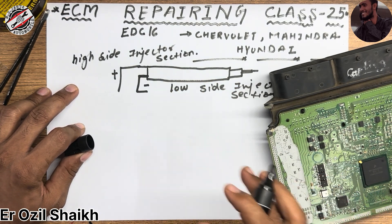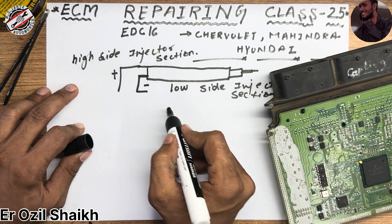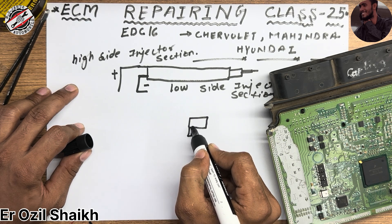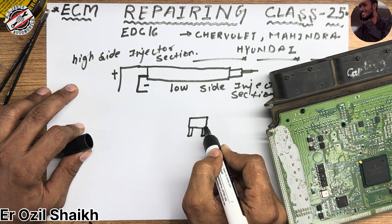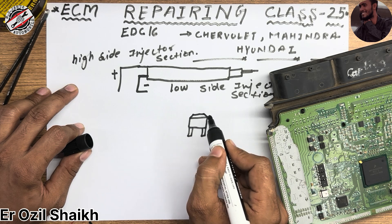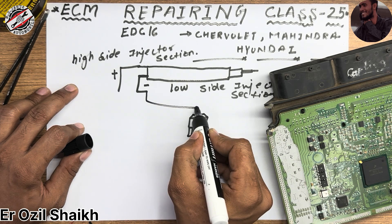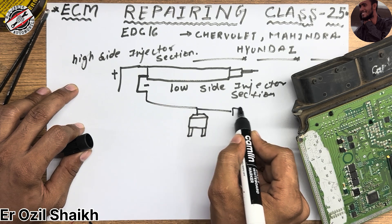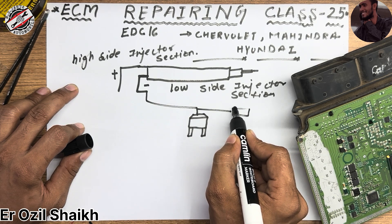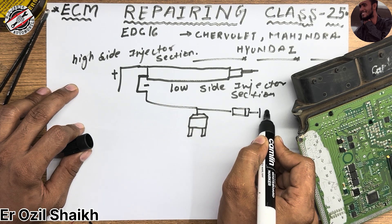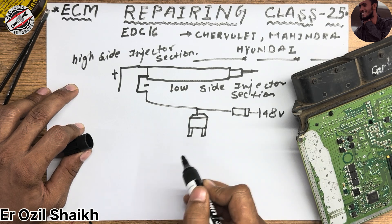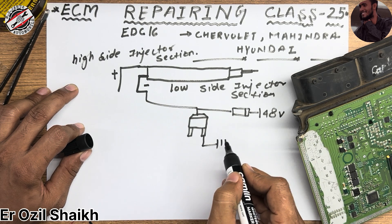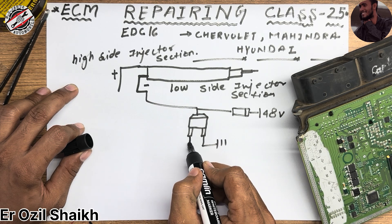The low side injector section works like this: we have an N-channel MOSFET. There is a diode for protection, and on one side of the diode there is 48 volts. The source of the MOSFET is connected to ground, and the drain connects onward.